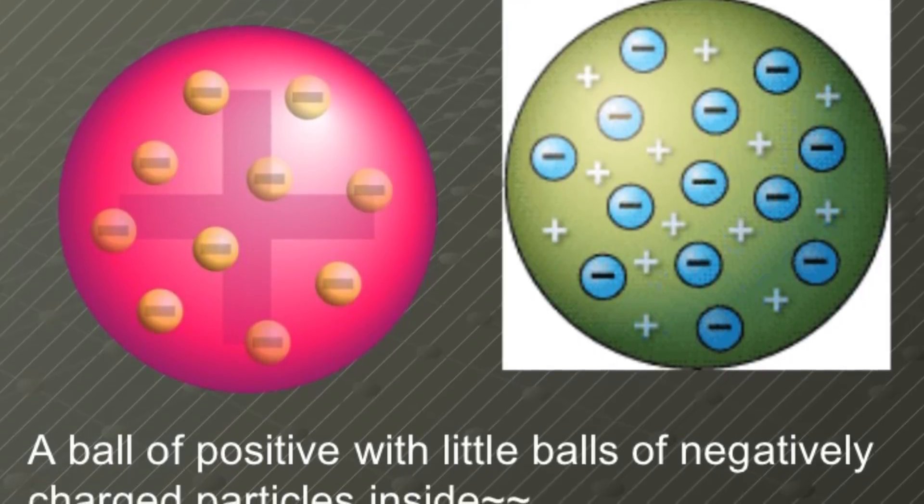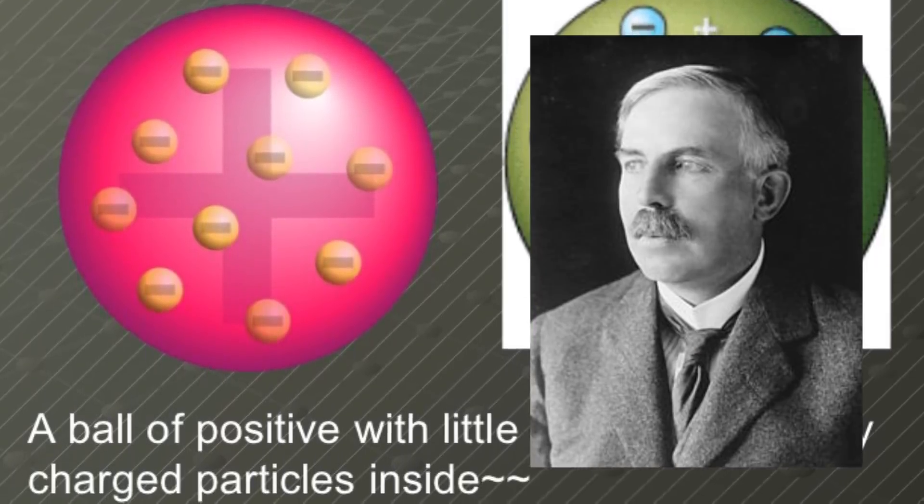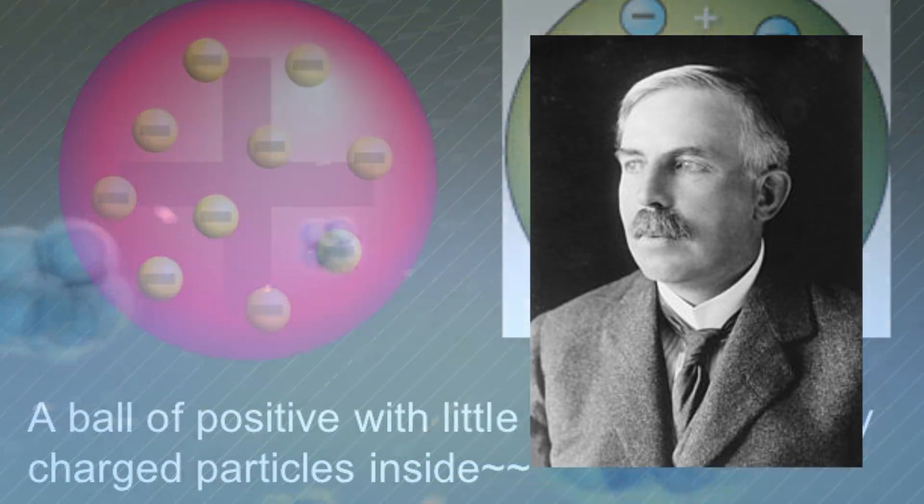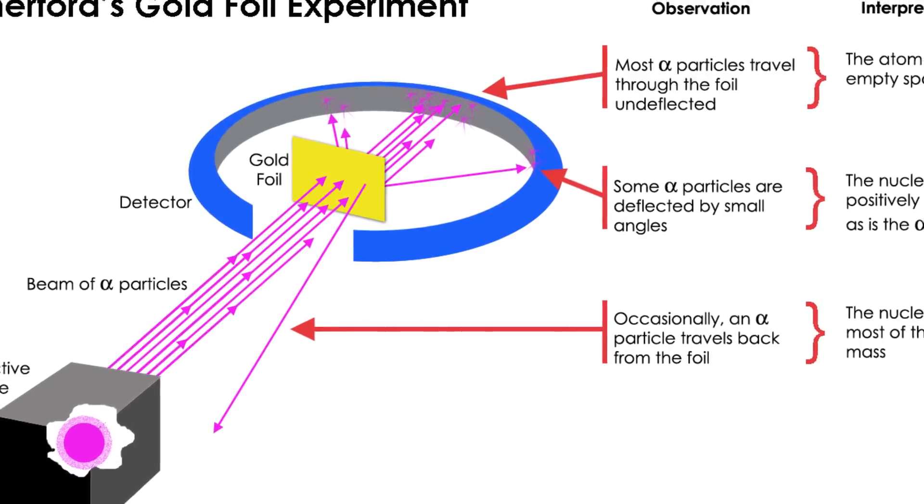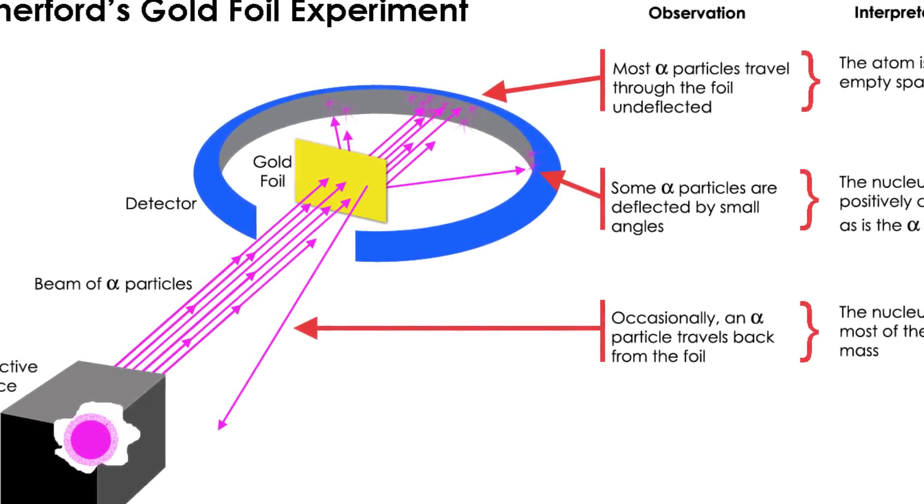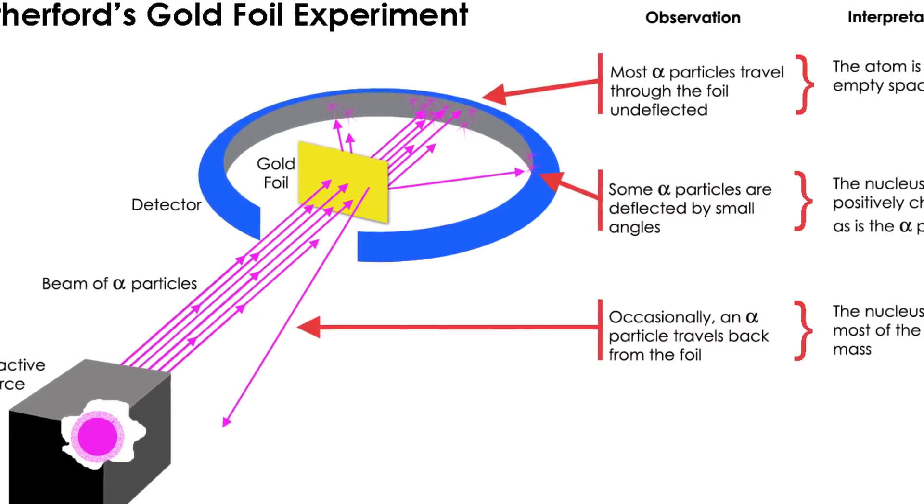A few years later, starting in 1908, the physicist Rutherford was interested in determining the true structure of an atom, which he thought was more complex than the plum pudding model predicted. What he ended up doing was firing charged alpha particles through gold foil, which most of us learn in chemistry as the Rutherford gold foil experiment. He said that if these gold atoms were like the plum pudding model, the particles would go straight through, and this is sort of what happened.